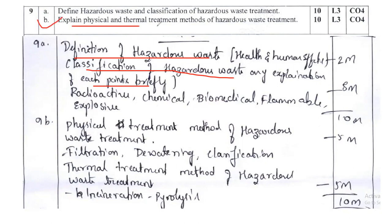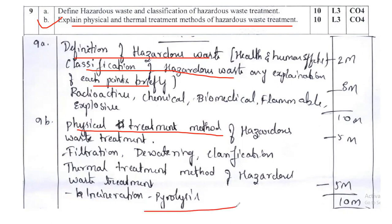Question number 9b explains the physical and thermal treatment of hazardous waste. Explain physical treatment and its different sub-treatment types. Similarly, thermal treatment is also important — you can cover incineration, pyrolysis, etc. These fall under thermal treatment. Weightage is 10 marks, managed as 5 plus 5.